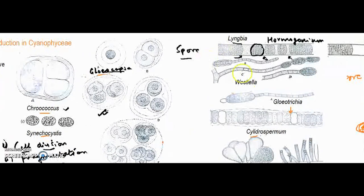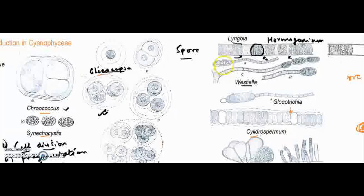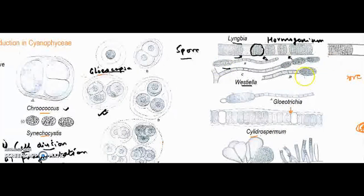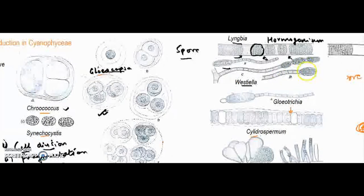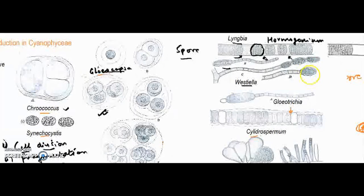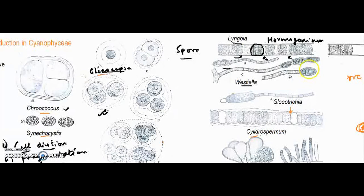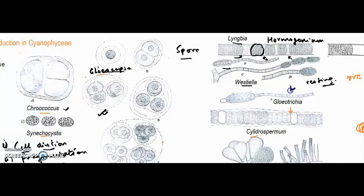In certain members like Westiella, these structures are formed terminally on the filament. The cells are different from other vegetative cells. Transverse division is quite frequent and the structure becomes spindle-shaped. The middle cells are wider, and this group of cells becomes enveloped by a thick-walled structure that acts like a resting spore called a hormospore.